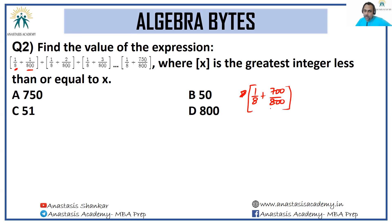From here on out, every term is going to give me 1, up until 1/8 + 750/800. So from 700 to 750, how many numbers are there? There are 51 numbers, so answer is option C.